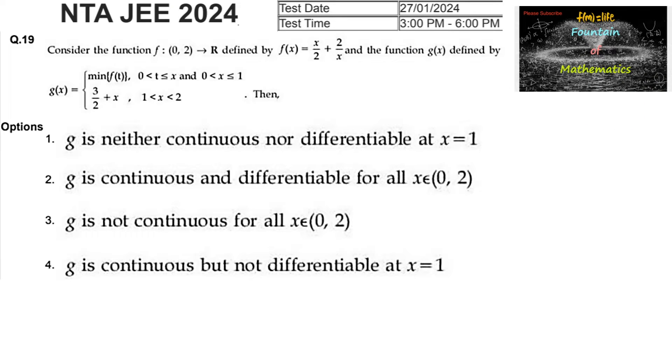Consider the function f: (0,2) → ℝ defined by f(x) = x/2 + 2/x. The function g(x) is defined as the minimum of f(t) when 0 < x ≤ 1, and 3/2 + x when 1 < x ≤ 2.